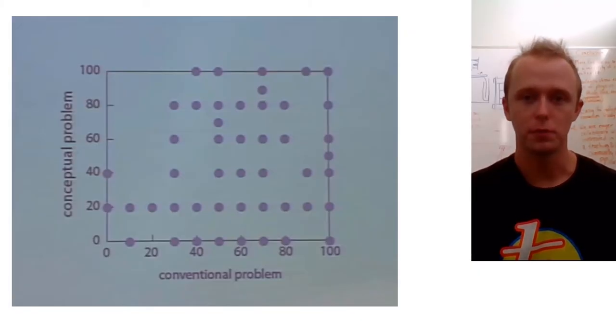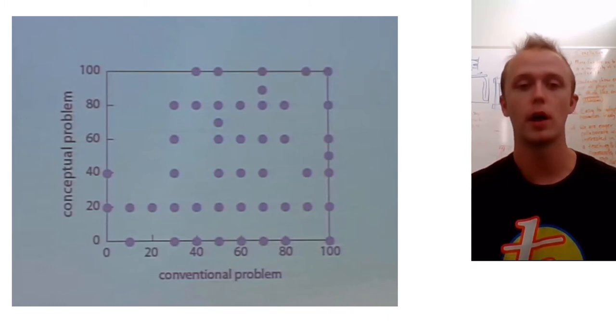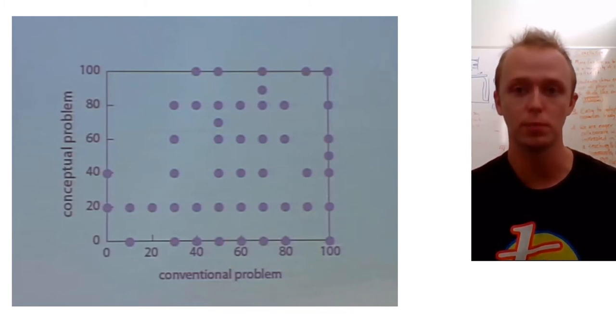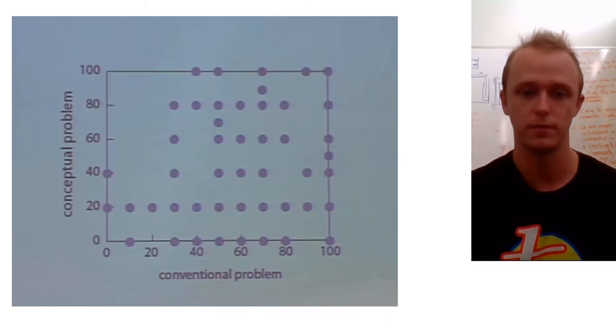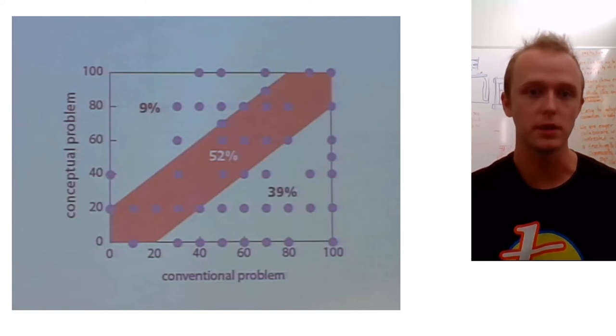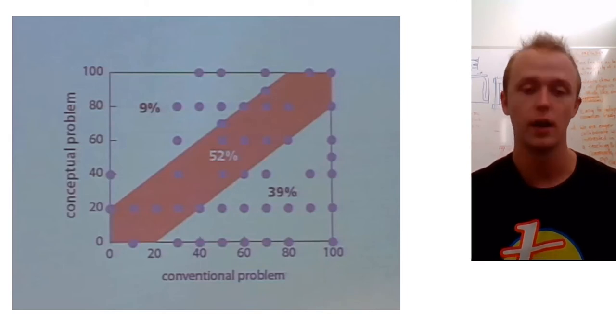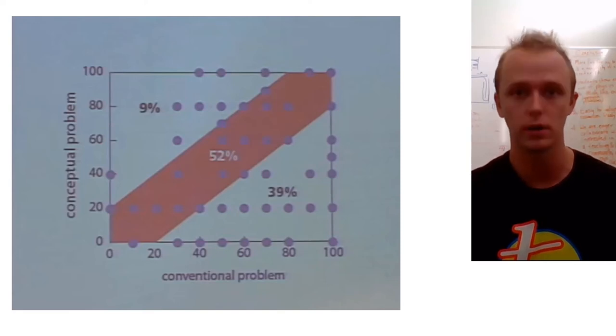Here we see a slide from Dr. Eric Mazur's lecture, Confessions of a Converted Lecturer. The plot points represent an individual student's performance on a conceptual problem in the Y direction plotted against their performance on a conventional problem in the X direction. As you can see, the upper left hand corner is unpopulated, which means that there weren't students who did well on a conceptual problem that didn't do well on a conventional problem. The implication, then, is that understanding the concepts leads to good problem solving.